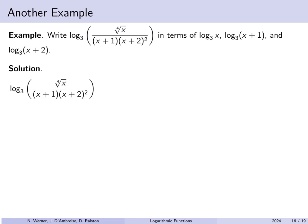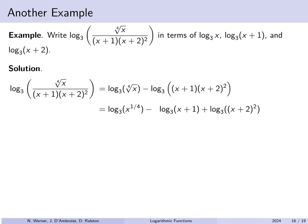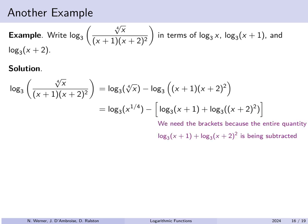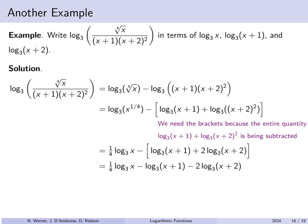Starting from log base 3 of that expression: first, break apart the quotient as log base 3 of the fourth root of x minus log base 3 of the entire denominator. The denominator (x+1)(x+2) squared is a product, so log base 3 of that becomes log base 3 of (x+1) plus log base 3 of (x+2) squared — but be careful: the minus sign applies to this entire sum, so you must distribute it. The first term, log base 3 of x to the 1/4, becomes 1/4 times log base 3 of x. After distributing the minus sign, you end up with 1/4 log base 3 of x, minus log base 3 of (x+1), minus 2 times log base 3 of (x+2).